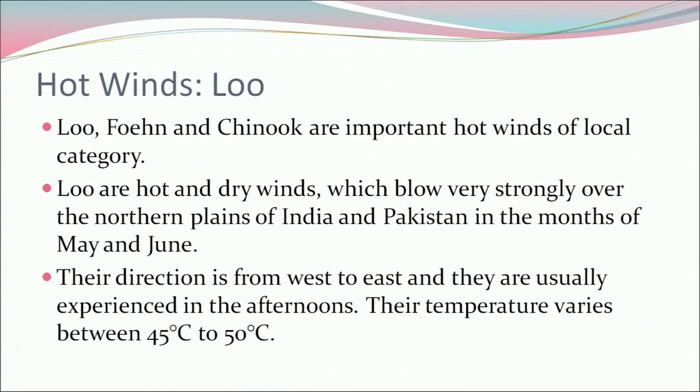Now, what are hot winds? We know about Loo, Foehn, and Chinook — these are important hot winds of local category. Loo are hot and dry winds which blow very strongly over the northern plains of India and Pakistan in the months of May and June. Their direction is from west to east and they are usually experienced in the afternoons, with temperatures varying between 45 to 50 degrees centigrade.